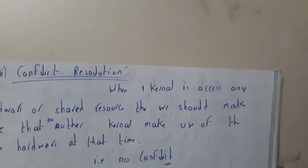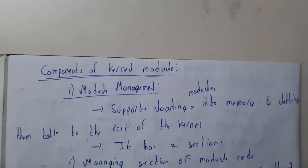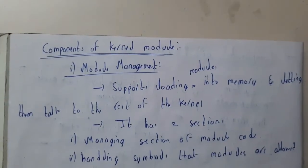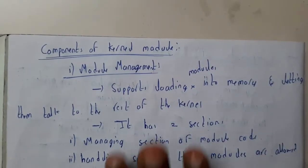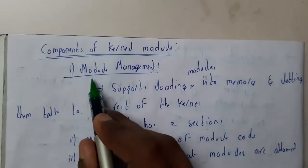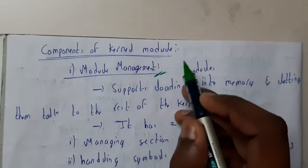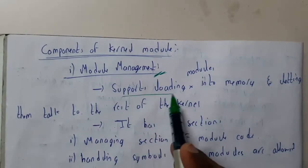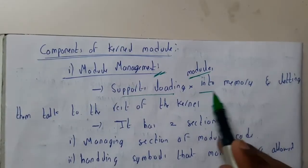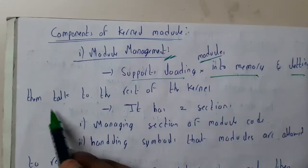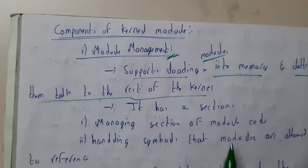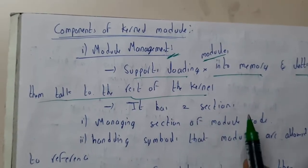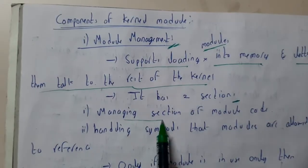Now let us go through the component modules of the kernel. We have three modules in total, and each will have a module manager. The module manager supports loading of modules into memory and lets them talk to the rest of the kernel — it allows communication with the kernel. It also has two sessions: one is a management session and another is handling symbols.